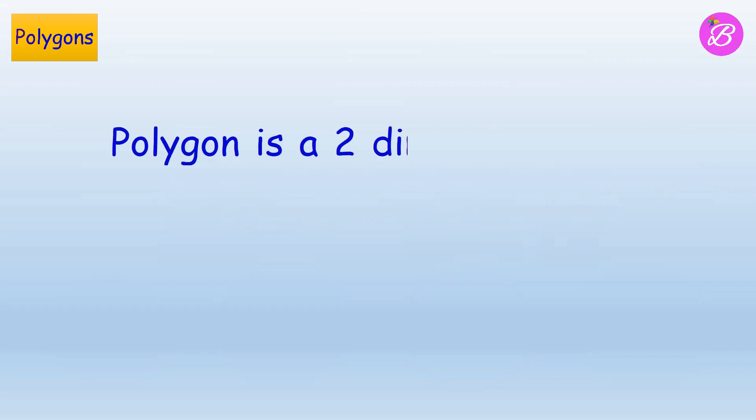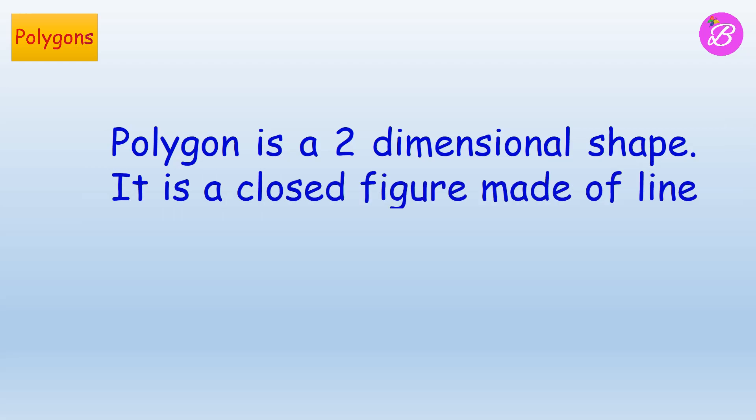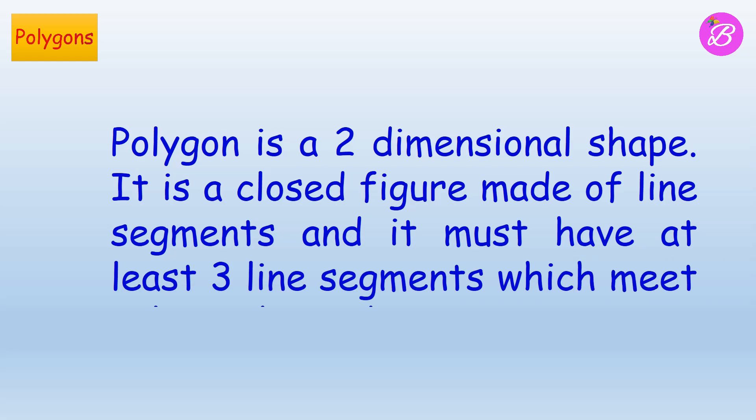Polygon is a two-dimensional shape. It is a closed figure made of line segments and it must have at least three line segments which meet only at the end points.